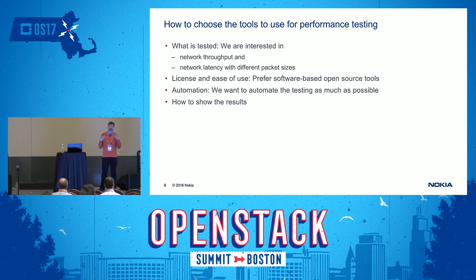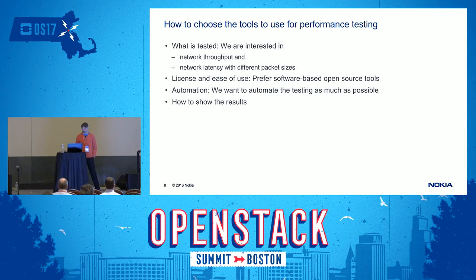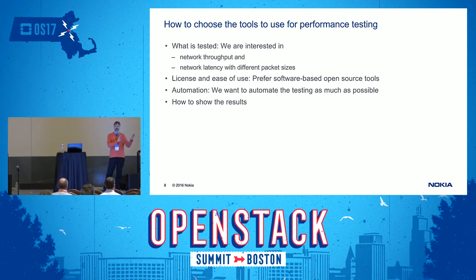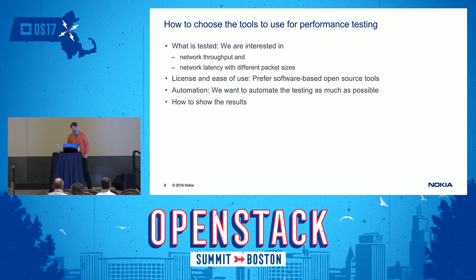In my experience, performance testing requires many repetitions with small changes each time, so the easier you make it the better. Another consideration is where you store and display results. It's good to have a lot of information stored, but even better to be able to visualize results. We were doing regression testing across platform releases, and having a graphical curve lets you easily spot if something is going wrong — just looking at raw numbers makes that much harder.